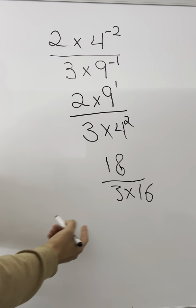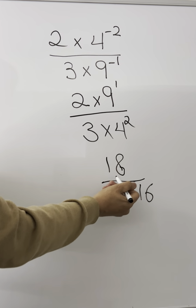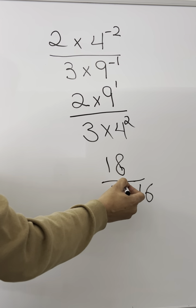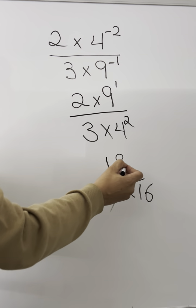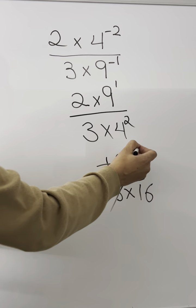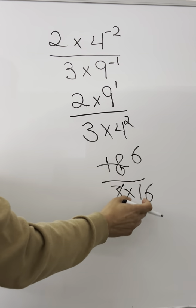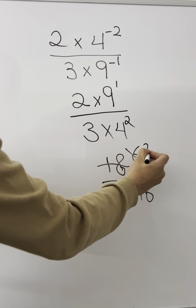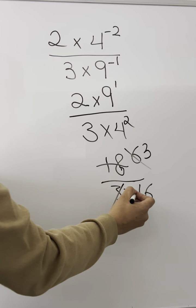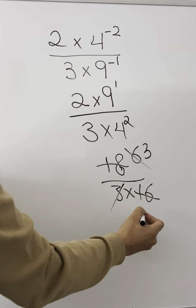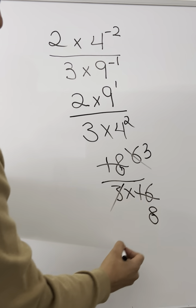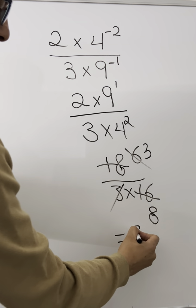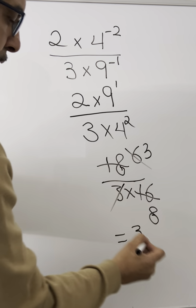Now, two things. You could either multiply these and reduce later, or you could reduce the 3 right away with the 18 — that will give you 6. And then because these two numbers are even, 2 goes into 6 three times and 2 goes into 16 eight times. So your final answer is going to be 3 over 8.